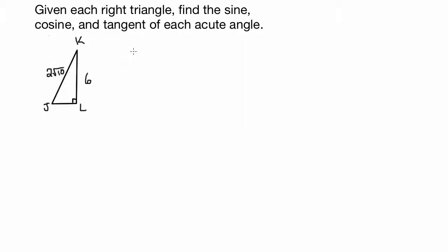You probably remember the Pythagorean theorem, which states that a squared plus b squared equals c squared — really what it means is the sum of the squares of the legs equals the square of the hypotenuse. So we'll call side JL x.